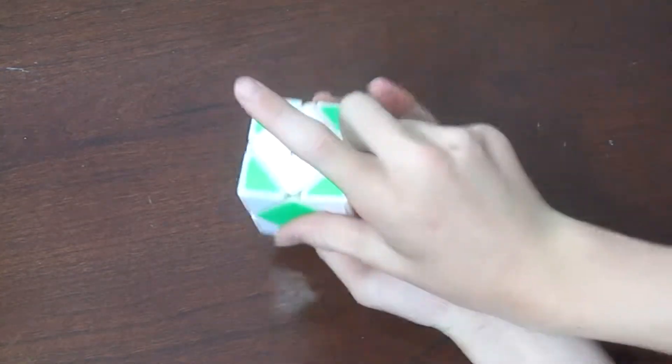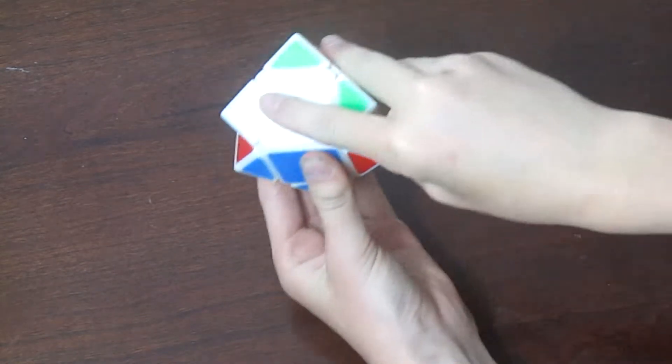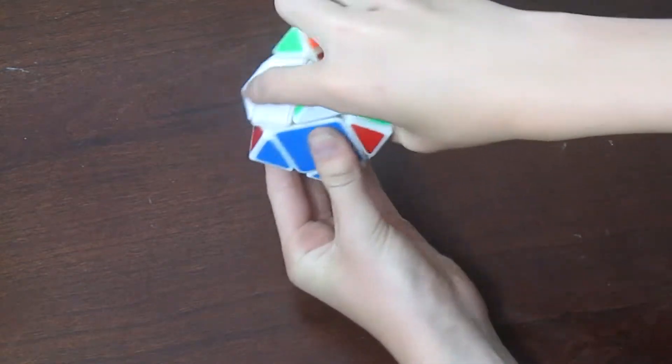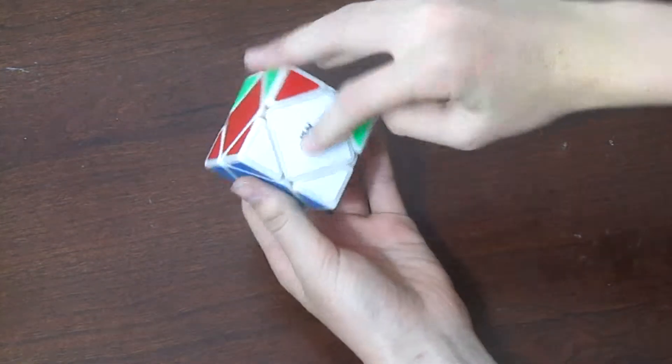So I'll show you one more time. Thumb, pointer finger, middle finger, ring finger. Push down. Push up with pointer finger, ring finger and middle finger. And then push up with your thumb and then pull down with your pointer finger.